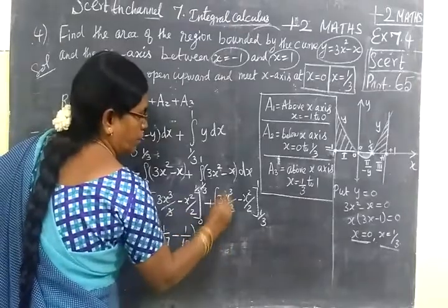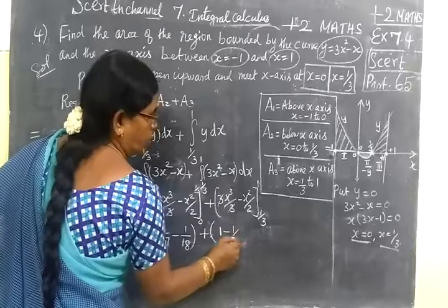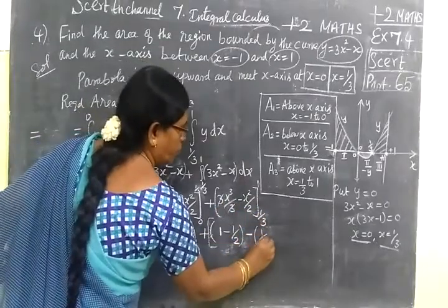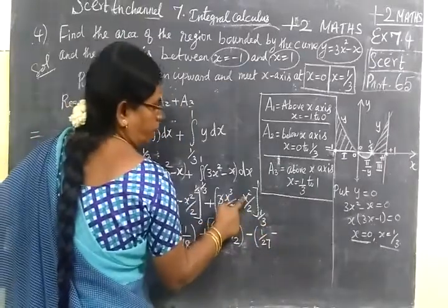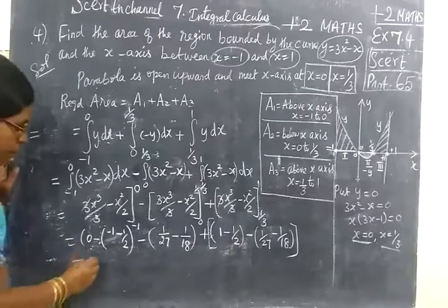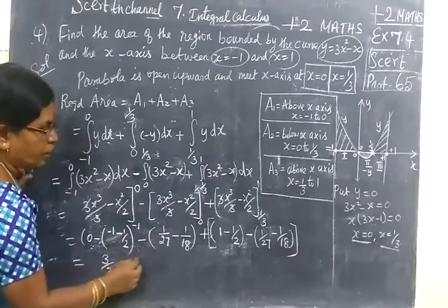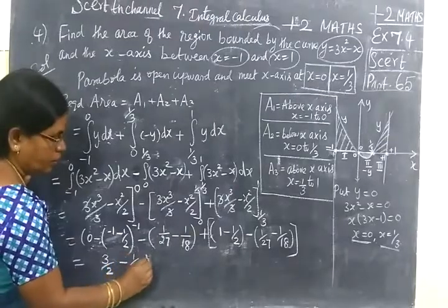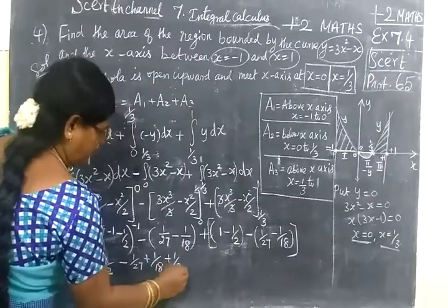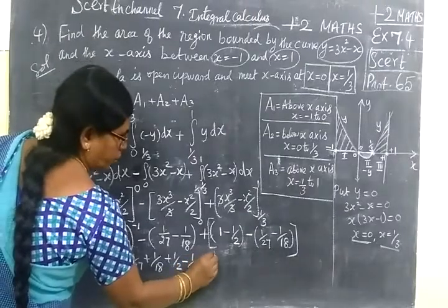Substituting and simplifying: the terms work out so that 3/2 plus 1/2 gives 4/2, which is 2. Then we have 2 minus 2/27 plus 2/18. Taking LCM of 54: 54 times 2 minus 4 (from 2/27) plus 6 (from 2/18) gives 108 minus 4 plus 6 equals 110.